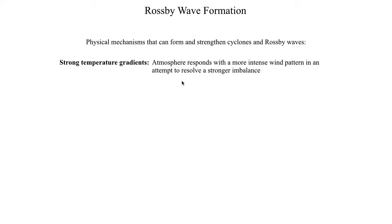First of which is the presence of a strong temperature gradient. If you remember back to the lecture on global circulation pattern, the atmosphere doesn't like temperature gradients, it wants to resolve those imbalances. So if you've got a strong temperature gradient, then the atmosphere is going to prompt a stronger response to resolve a stronger imbalance.